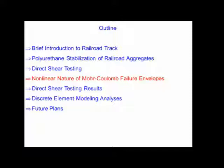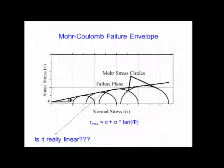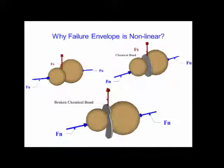Now I'll discuss Mohr-Coulomb failure envelopes and their non-linear nature. The Mohr-Coulomb equation is: τ_max = c + σ × tan(φ), where c is the apparent cohesion intercept, σ is normal stress, and τ_max is shear strength. For non-cohesive soil, c should be zero, but there will always be some mathematical error due to the non-linearity of this envelope that creates a mathematical cohesion intercept — that is why we call it the apparent cohesion intercept.